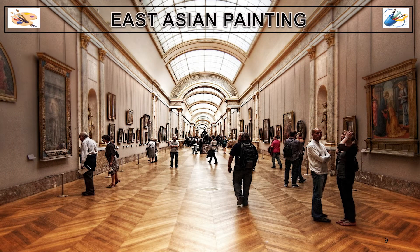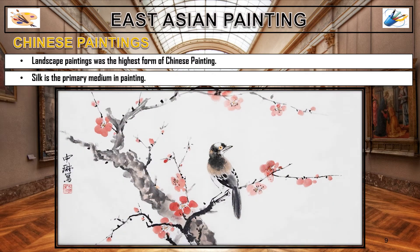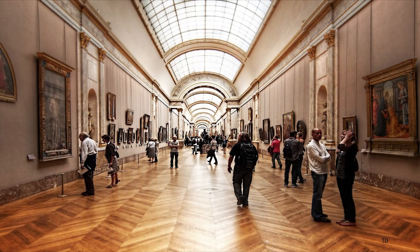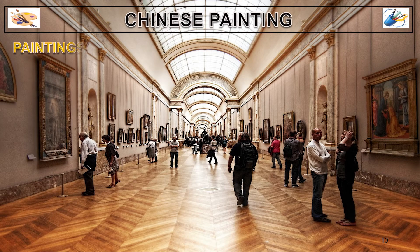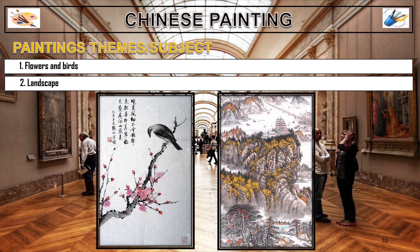Now let's go back to China and talk about their painting. Landscape painting is regarded as the highest form of painting in China. Silk is the primary medium in painting — meaning they use silk as the material on which they paint. The Chinese painting subjects usually include flowers, birds, and landscapes. You may also notice some writing in the paintings — that is called calligraphy.